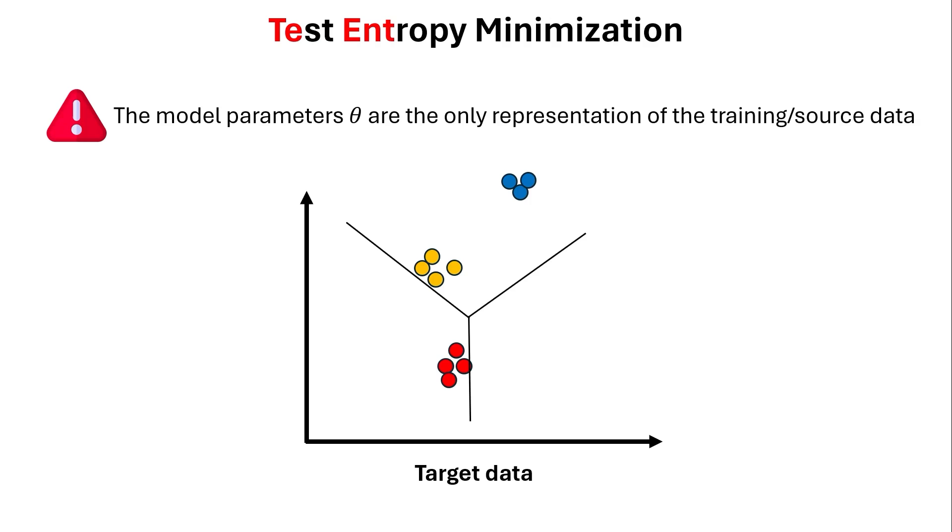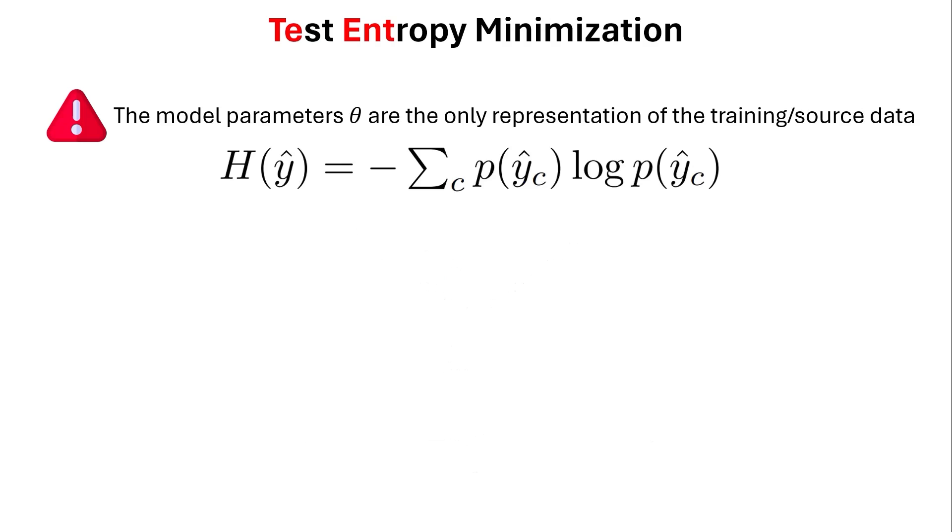And what they propose is that instead of updating the model parameters, let's just do something else. And the thing that they do is that they say we have a loss function to be the minimization of entropy, right? Let's now, instead of modifying the parameters based on this loss function, modify the normalization values.